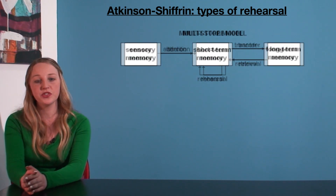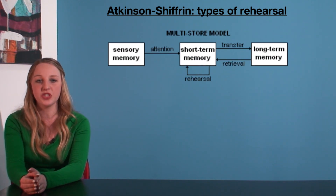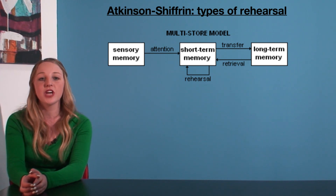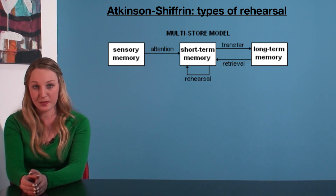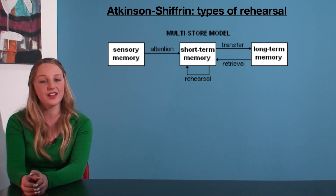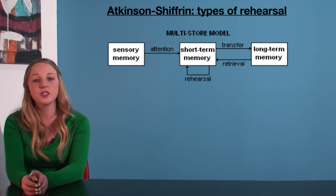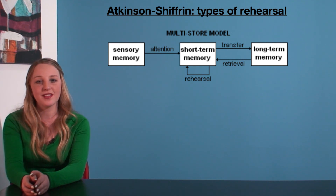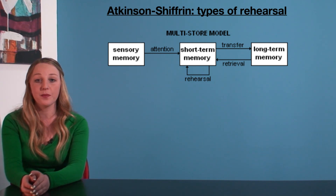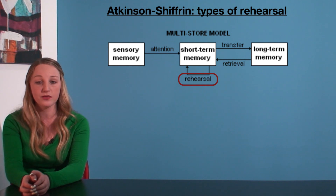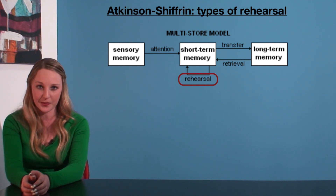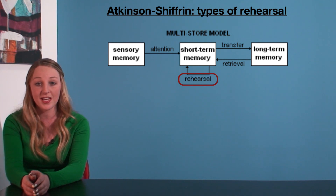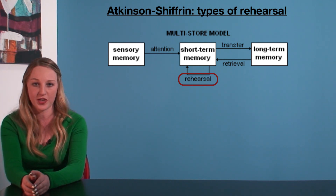In the previous video, we introduced Atkinson Shiffrin's multi-store model of memory. Remember that the three types of memory are sensory memory, short-term memory, and long-term memory, and their multi-store model looked a little bit like this. We suggested in the last video that rehearsal can be used to encode stimuli from short-term memory into long-term memory. Rehearsal can also be used to keep information in short-term memory for a longer duration.